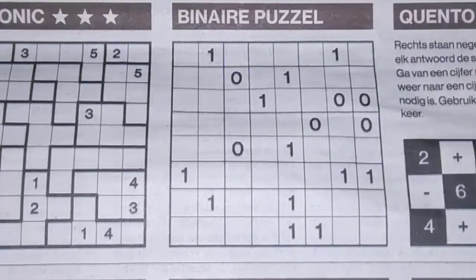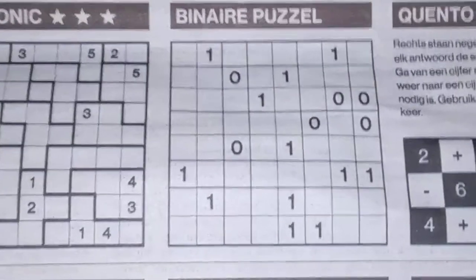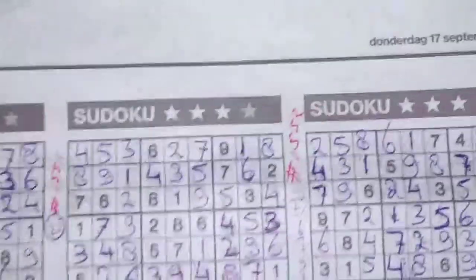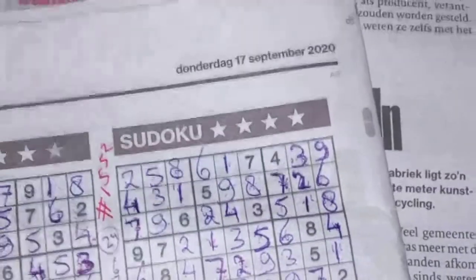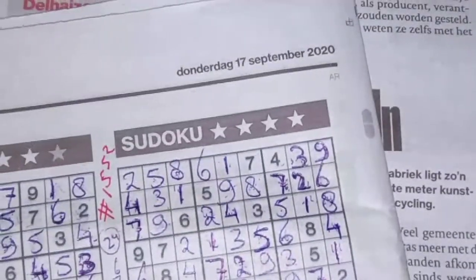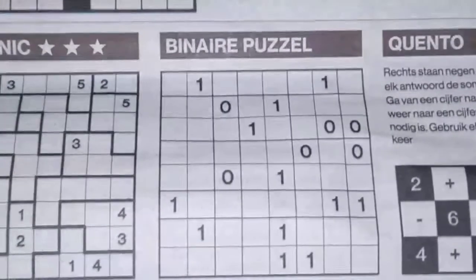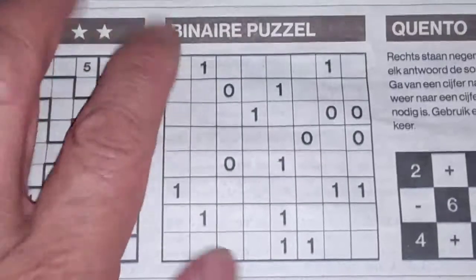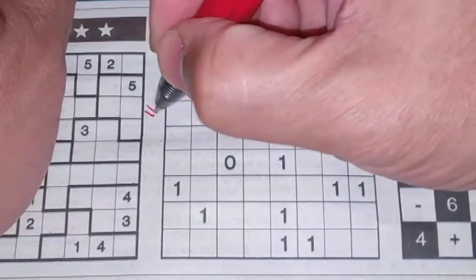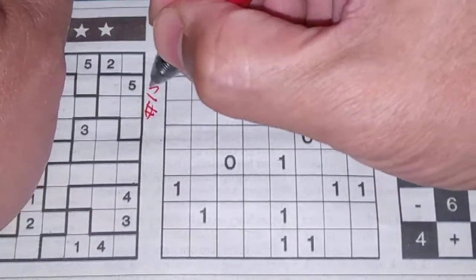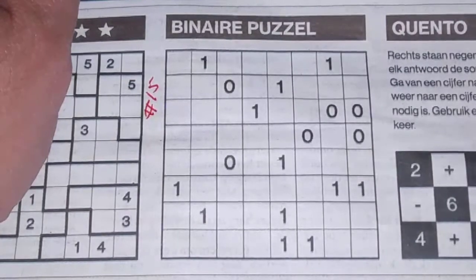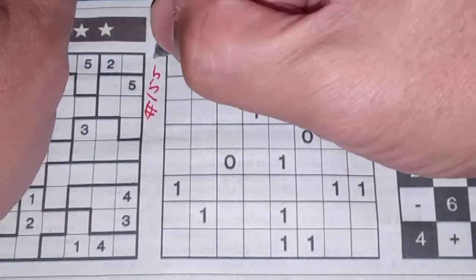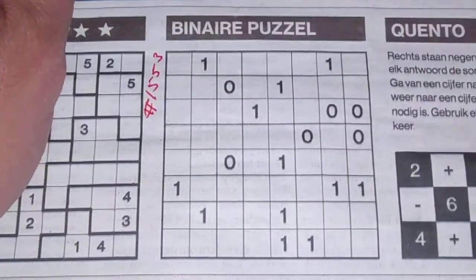Sudoku friends, welcome back. In this edition of today's newspaper on Thursday, September the 17th, 2020. The fifth puzzle is a binary puzzle, and this will be number 1553.